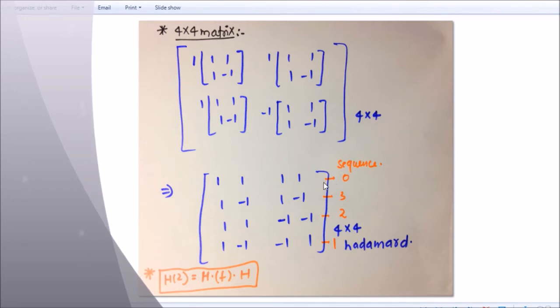So what you have to do? Here is your sequence 0, 3, 2, 1. This sequence is not matter in Hadamard transform, but this is matter in Walsh transform. This sequence I will explain in Walsh transform.